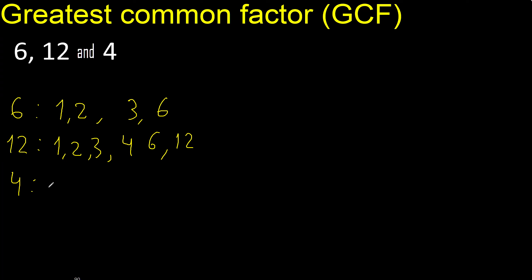Factors of 4. Divided by 1 is 4. Next, divided by 2 is 2. 2 is here.